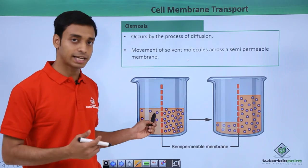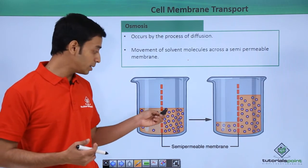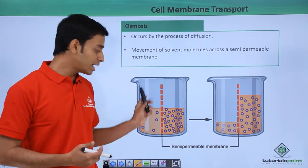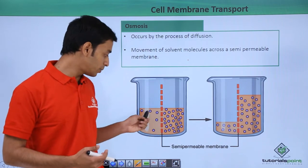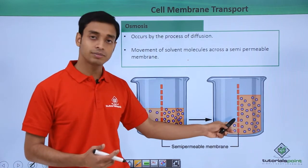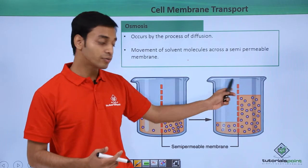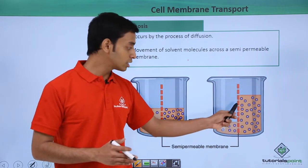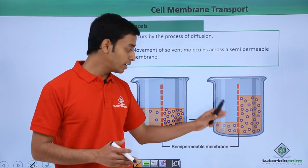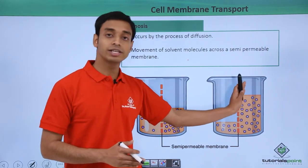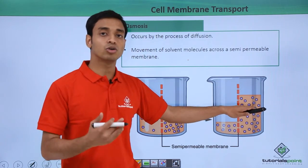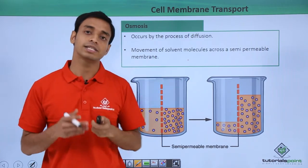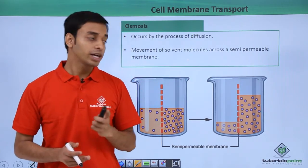In this picture we can see that the solvent level is almost the same on both sides. The solute molecule concentration is less in one compartment and very high in the other. With time, the solvent moves from the low-solute side to the high-solute side. After some time, the solute concentration becomes equal in both compartments, while the solvent level increases on the high-solute side. This movement of solvent molecules across a semi-permeable membrane is osmosis.